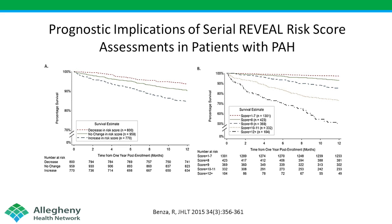The risk prediction score has been validated in several other registries as well as in newly diagnosed patients. The score can also be used serially, and changes in the score — whether worsening or improvement — have high predictive value. The recalculation of the absolute score at any time after therapy has been shown to accurately predict subsequent one-year survival in these patients.